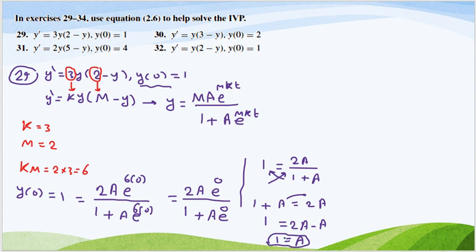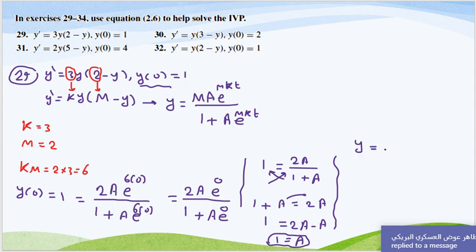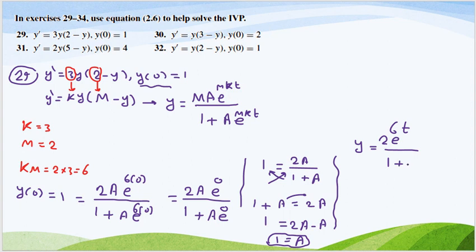We can now substitute Y equals M which is 2 times 1 times E to the power 6T over 1 plus 1 times E to the power 6T. This is the solution for this equation.